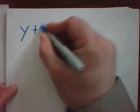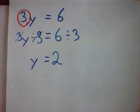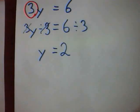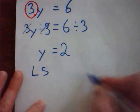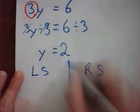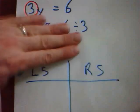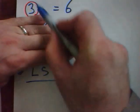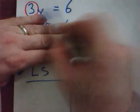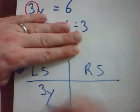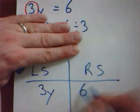Next example. Now, I'm going to check by doing what we call left side, right side. I'm going to make a little chart. I'm going back to my original equation here at the top, 3y and 6. On the left side, I have 3y. On the right side, I have 6.